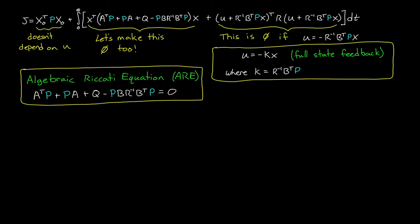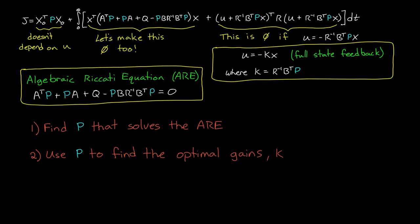So to summarize, if we find P that solves the algebraic Riccati equation, that'll set this part of the cost function to zero. And then we can use that matrix P to find the optimal gains for the controller U that sets this part of the cost to zero. And what's really great about this method is that solving the algebraic Riccati equation is much more efficient than any of the other methods we looked at.